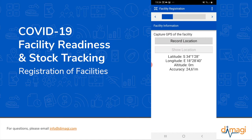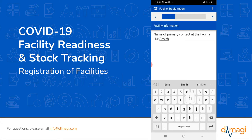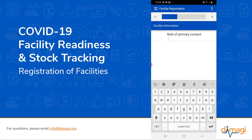The GPS location is captured in latitude and longitude, and allows you to see the accuracy of the position that was captured. Here we want to capture the primary contact at this facility. In this case, we're going to say it's Dr. Smith. Dr. Smith's phone number is listed here, and their role at the facility is Chief Medical Officer.